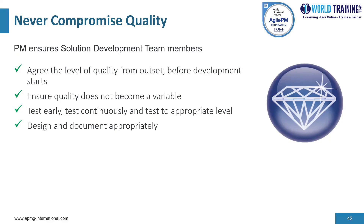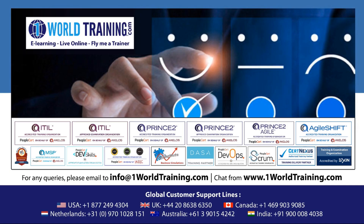Another way DSDM protects quality is by testing work early and ensuring a short, informal test–fix–retest cycle to confirm that requirements and the evolving solution actually work as expected. The PM ensures solution development team members agree the level of quality from the outset before development starts, ensures quality does not become a variable, ensures testing is done early and continuously at the appropriate level, and ensures the solution team designs and documents to the appropriate level of quality.